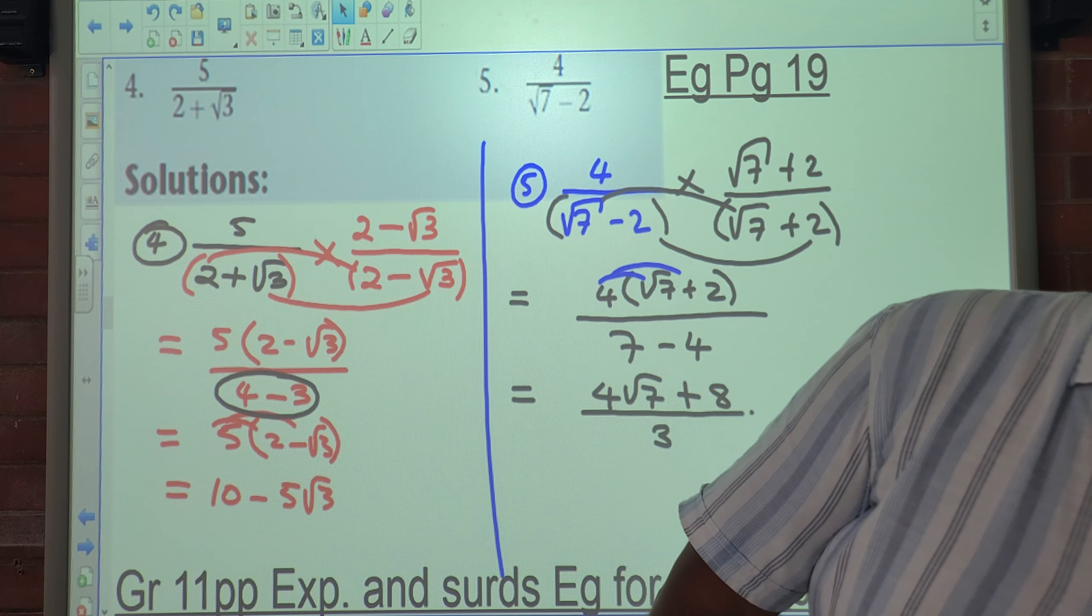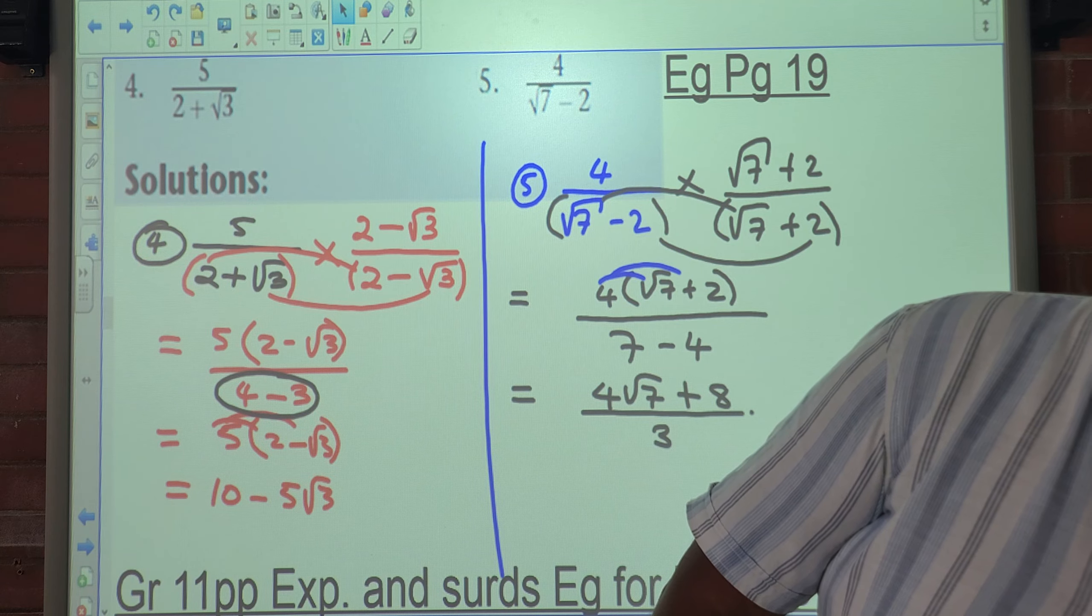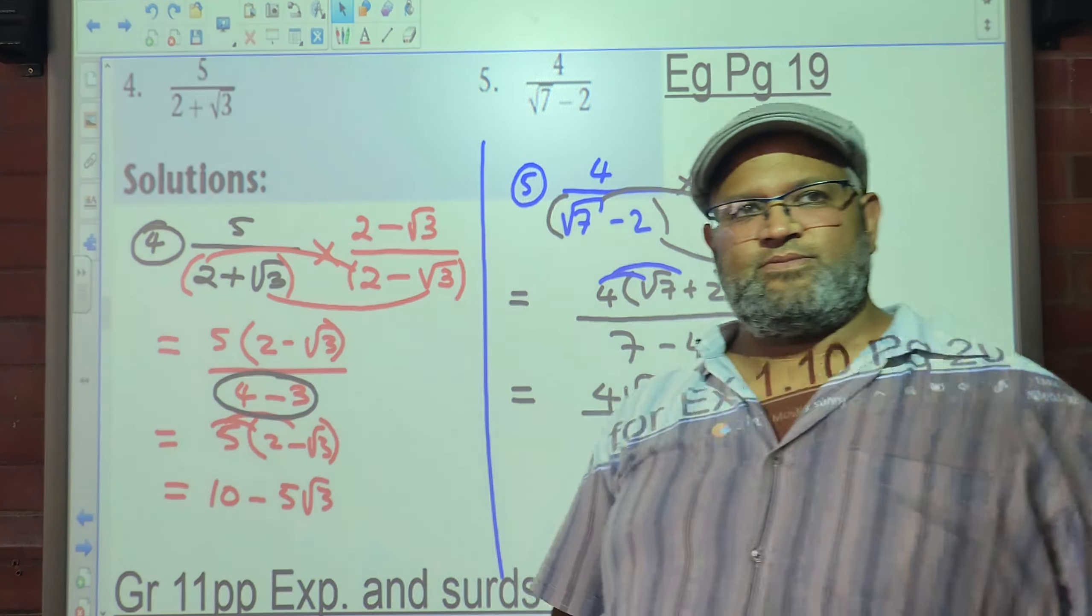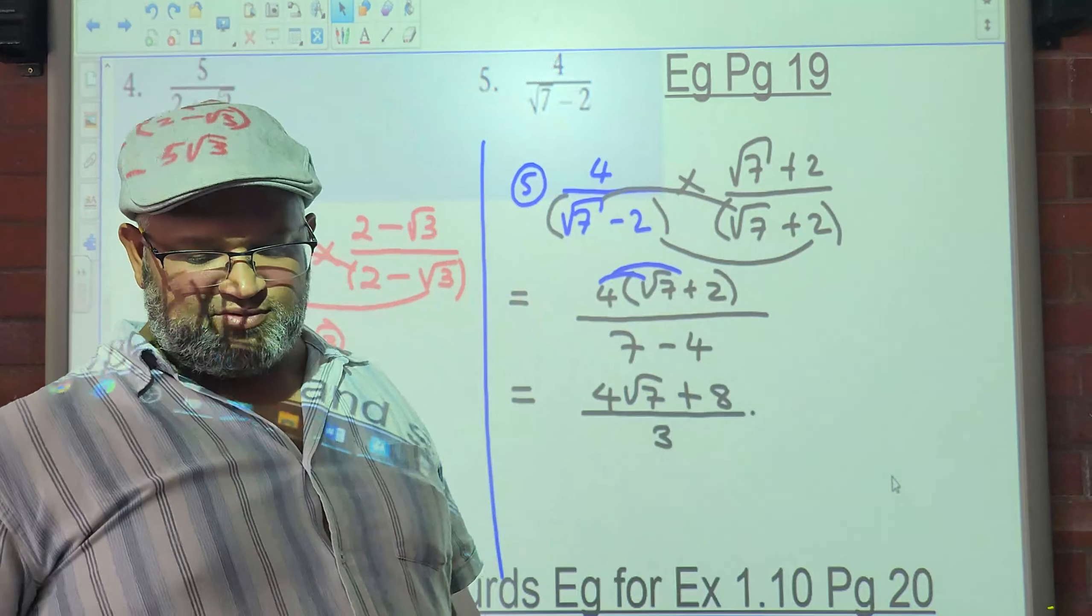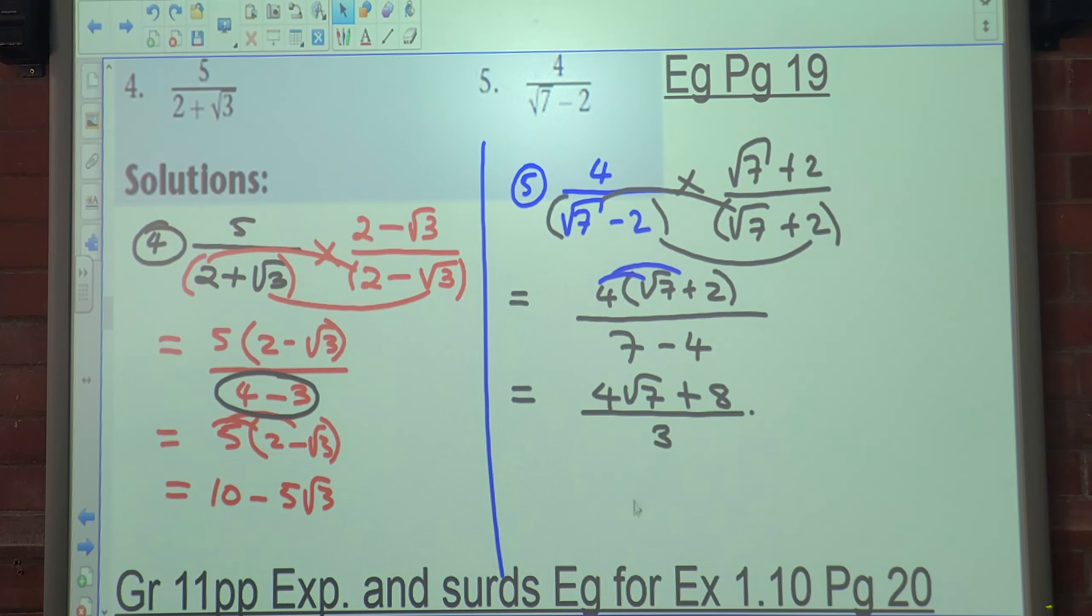So with that you should be able to do exercise 1.10. Okay, please do the odd numbers for me. Any problems, you can beat me now. Please do the odd numbers for me. Okay, go.